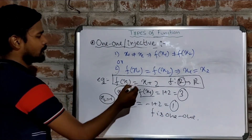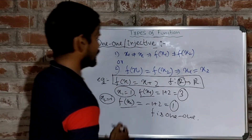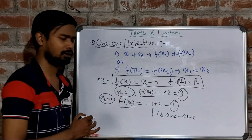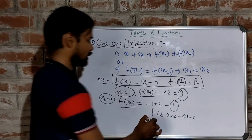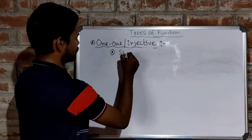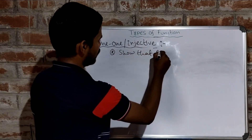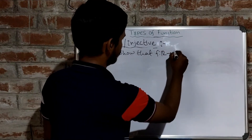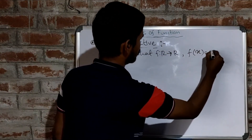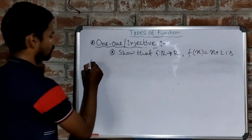If we put any kind of different real numbers into this function, we can get different images. So we can say that f is one-one, and f mapping R to R where f(x) = x + 2 is a one-one function.